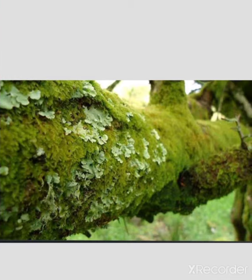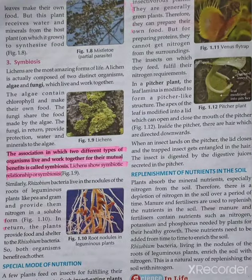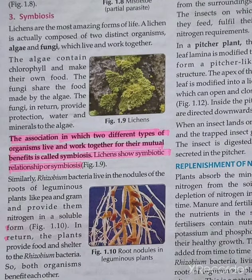This is the image of lichens. Now, Rhizobium bacteria live in the nodules of the roots of leguminous plants like pea and gram, and provide them nitrogen in a soluble form. These Rhizobium bacteria are present in the nodules of the roots of leguminous plants such as pea and gram.